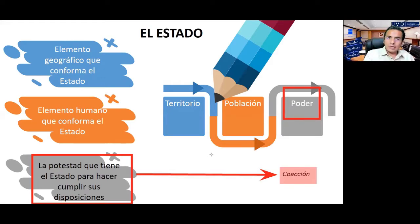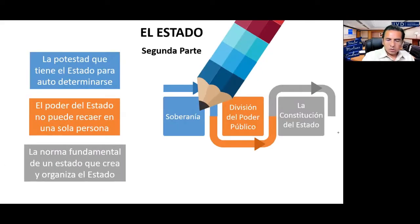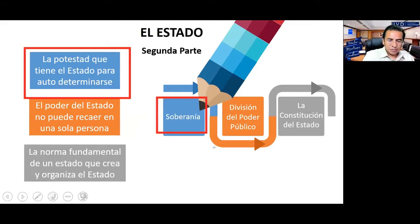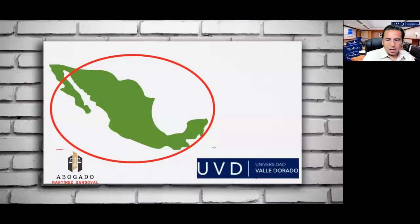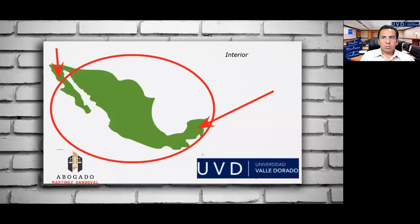Después de estos tres elementos tenemos un cuarto elemento que conforma el estado: la soberanía. El estado se autodetermina. Hay dos tipos de soberanía: la soberanía interior, que se ejerce dentro de nuestro propio territorio, la capacidad de autodeterminarnos.